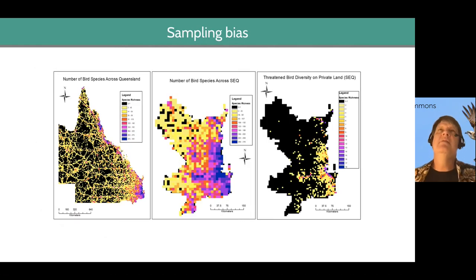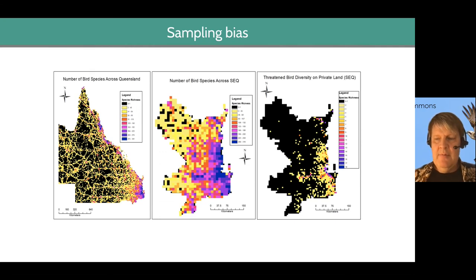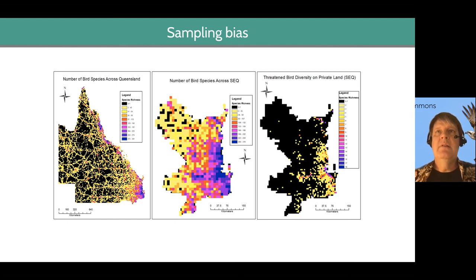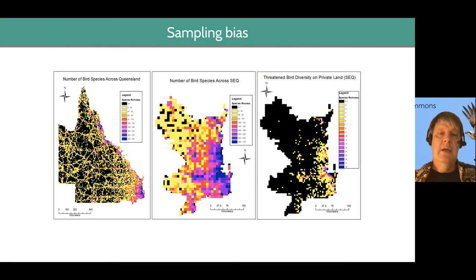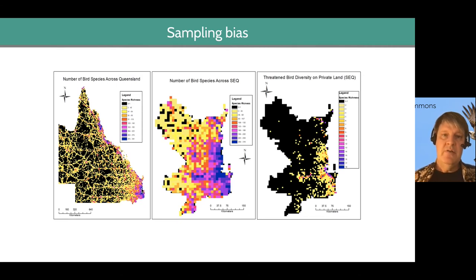One of the primary problems we have with unstructured or opportunistic data — which is most of the biodiversity data that's collected on this planet — is we get most of the records from where people live. This map on the far left shows all the bird records ever collected in Queensland, Australia. These black areas are places where nobody has done a bird survey recorded in a database. The blue and purple colors are places where people live, and also where the most bird surveys have been done.